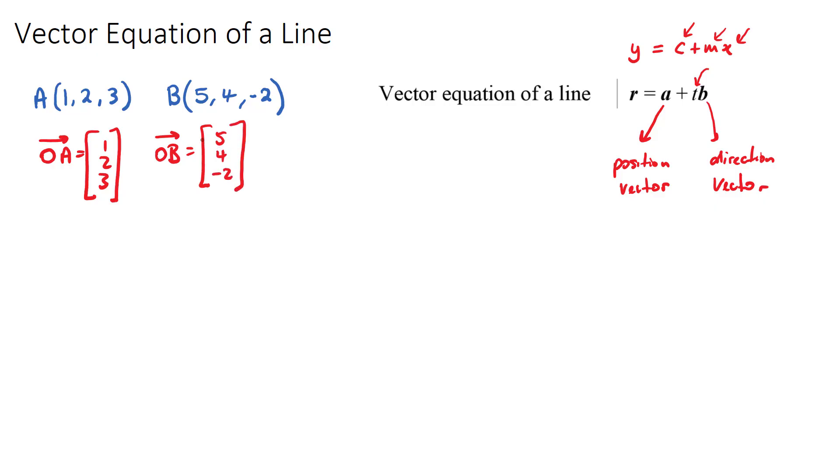So if we want to find the equation, the vector equation of the line that passes through A and B, we need two things: some position vector, so it's some position that our vector will pass through, and it will pass through both A and B, so we can choose either OA or OB, and then we need a direction vector.